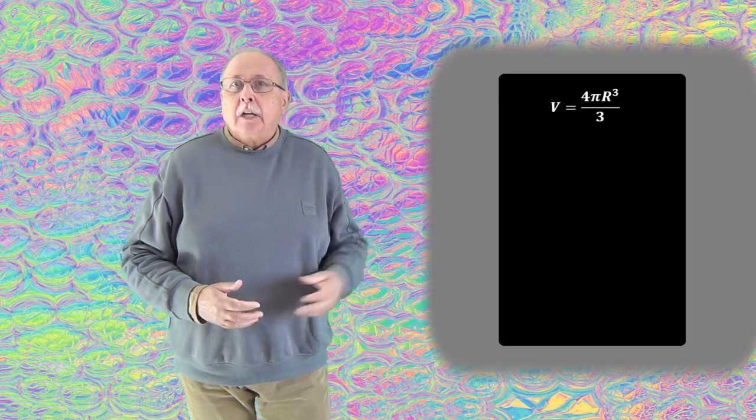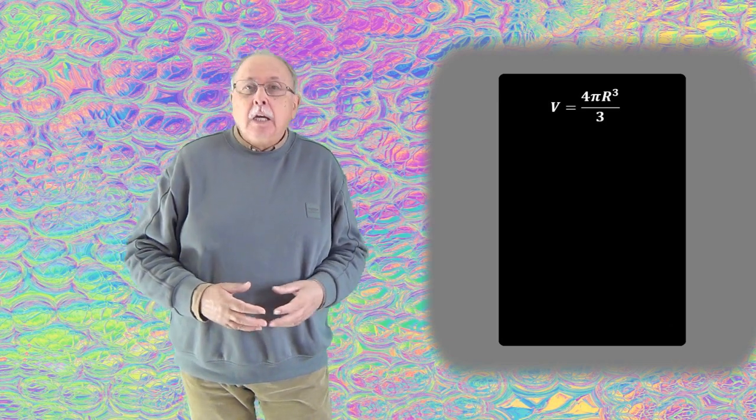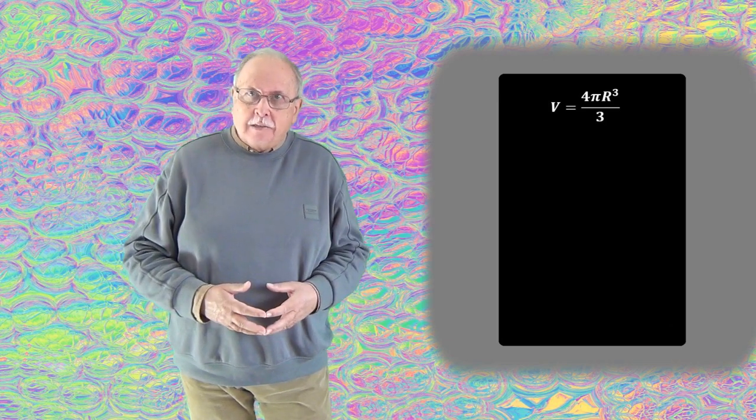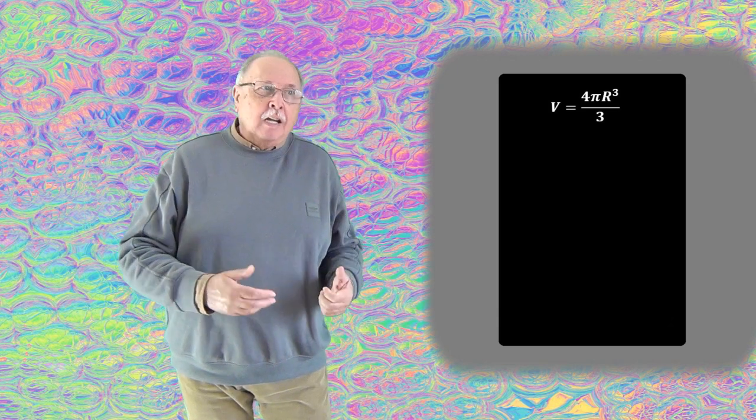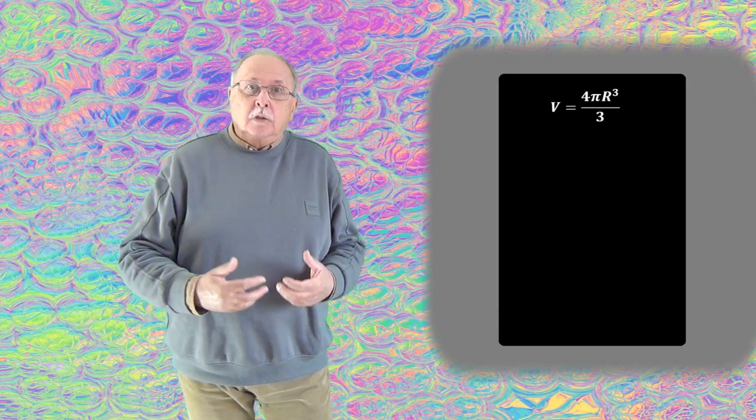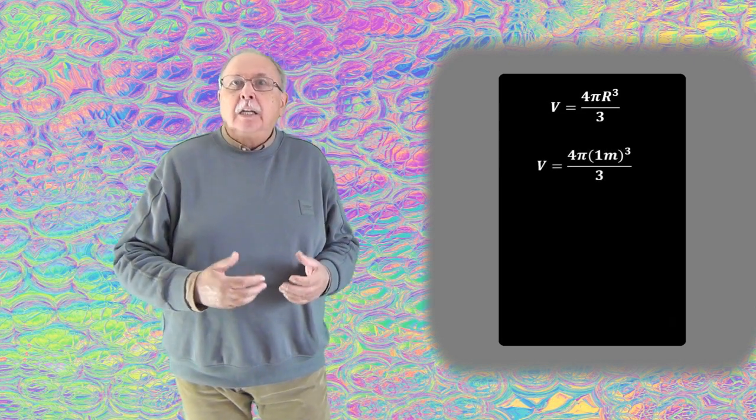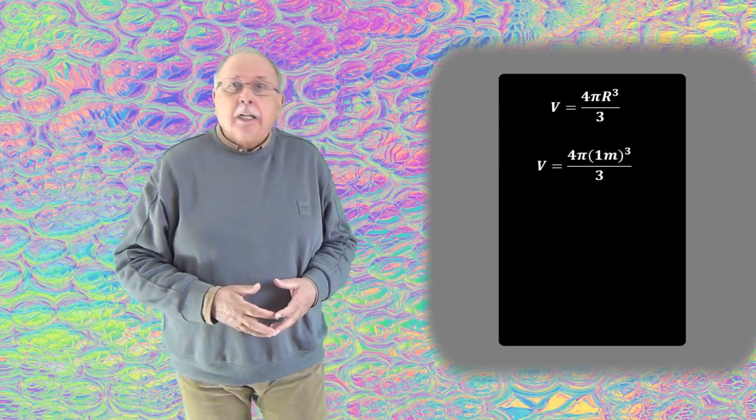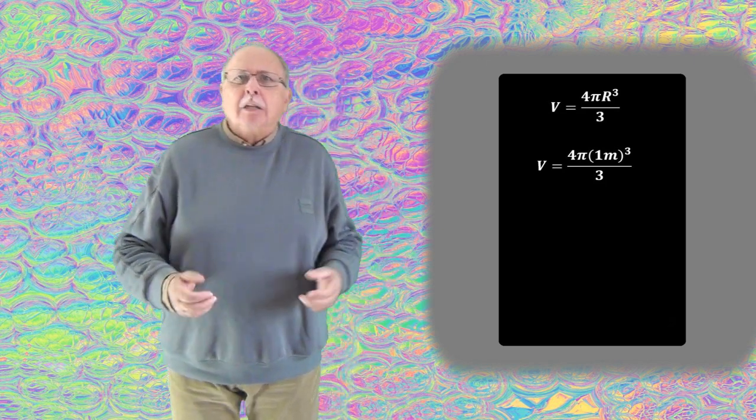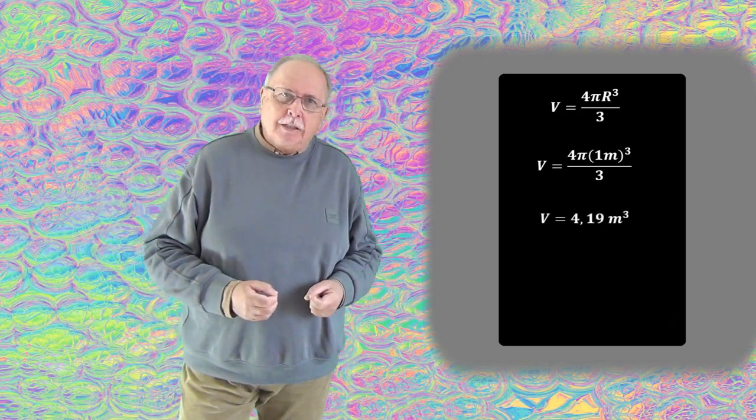Să-i calculăm volumul. Volumul unei sfere se calculează cu formula 4πR³/3, unde R este raza sferei. Și pentru că raza sferei noastră este un metru, înseamnă că volumul ei este 4π/3 metri cubi, adică dacă facem calculele, cam 4,19 metri cubi.